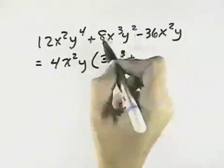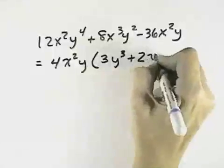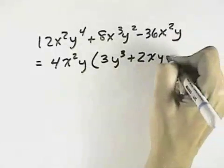In our middle term, 8 divided by 4 is 2. The x cubed cancels with the x squared leaving 1x. The y squared cancels with the y leaving 1y.